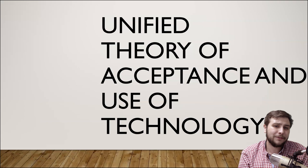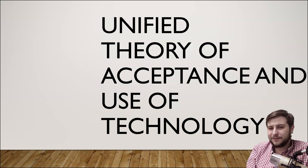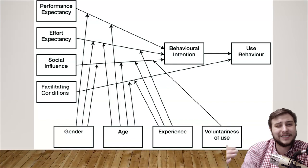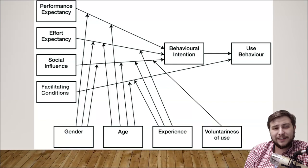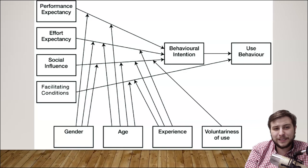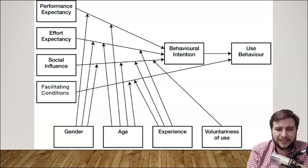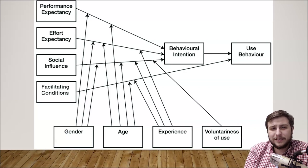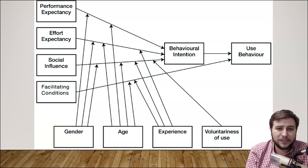Next is the Unified Theory of Acceptance and Use of Technology — a more specific breakdown of the original TAM model. It includes performance expectancy, effort expectancy, social influence, and facilitating conditions, as well as moderating factors like gender, age, experience, and whether use is voluntary or forced.